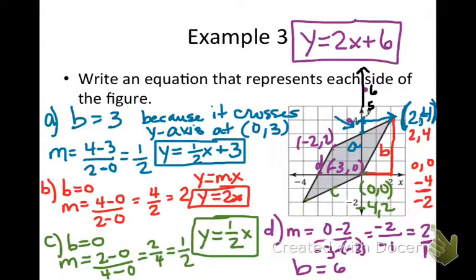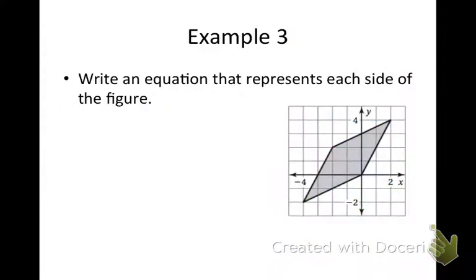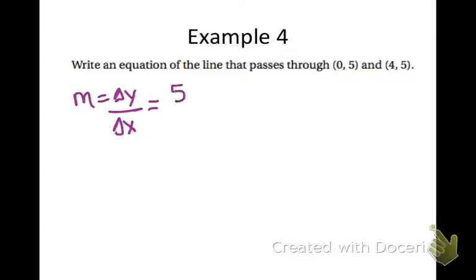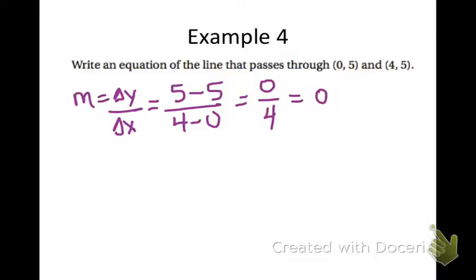So we had to write 4 equations for this parallelogram. The final example: write an equation of the line that passes through two given points. Since I'm given two points, I can calculate slope as change in y over change in x. That's 5 minus 5 over 4 minus 0, which is 0 over 4 — a slope of 0.